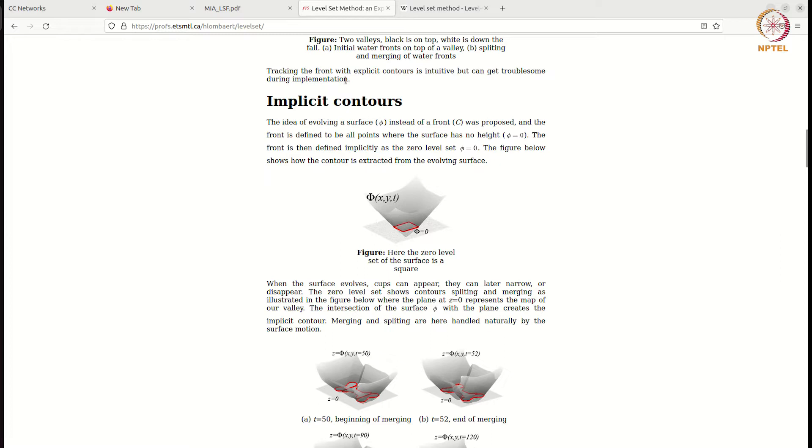So instead of evolving C we evolve a surface which is represented by phi. And with the help of phi we can calculate, we can estimate the location of C in an implicit way. How?